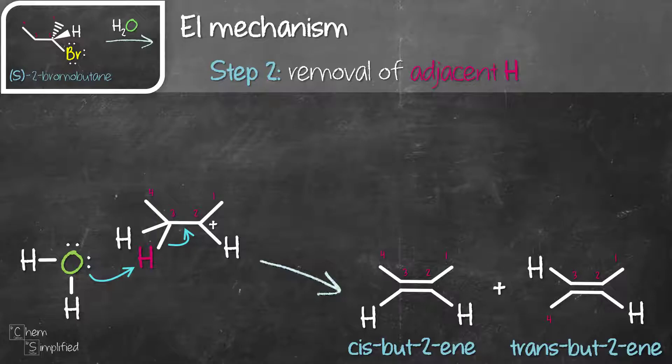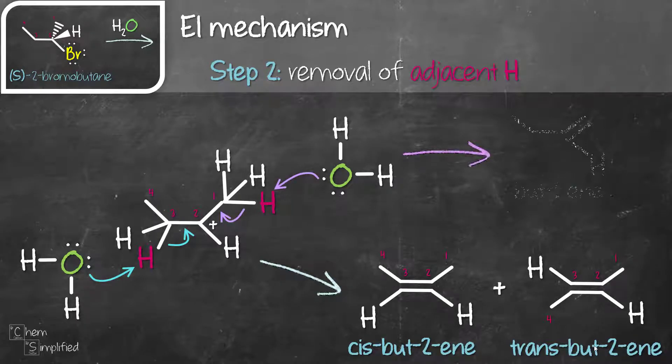Now in addition to this, there are three hydrogens connected to carbon-1. So we can also remove one of the proton there and that's gonna give us a different product which is but-1-ene. As you can see, there are possibilities of multiple products formed from an E1 mechanism.